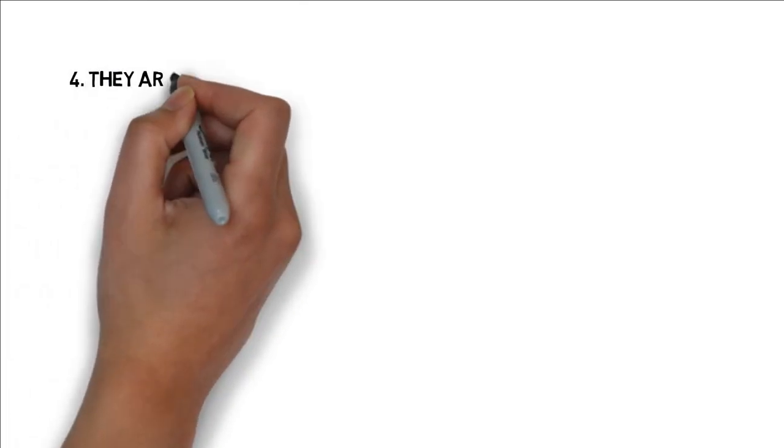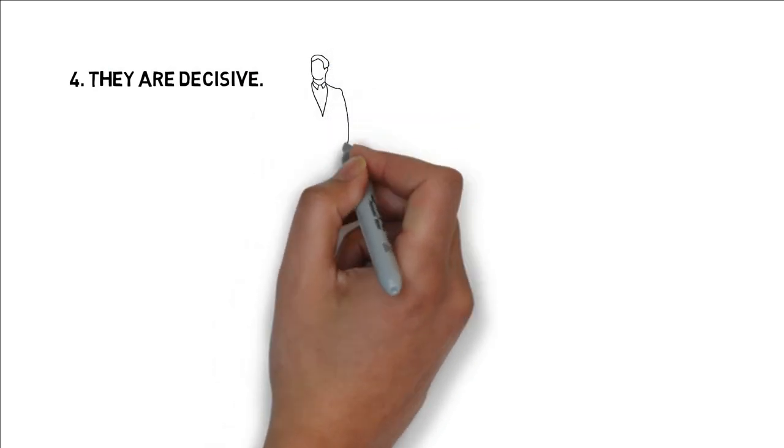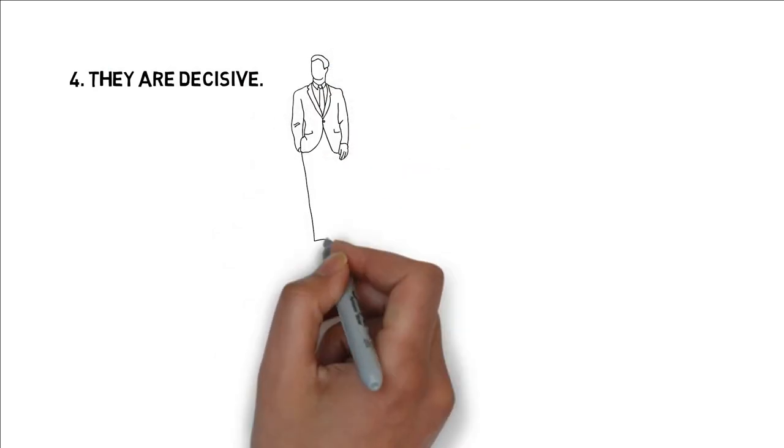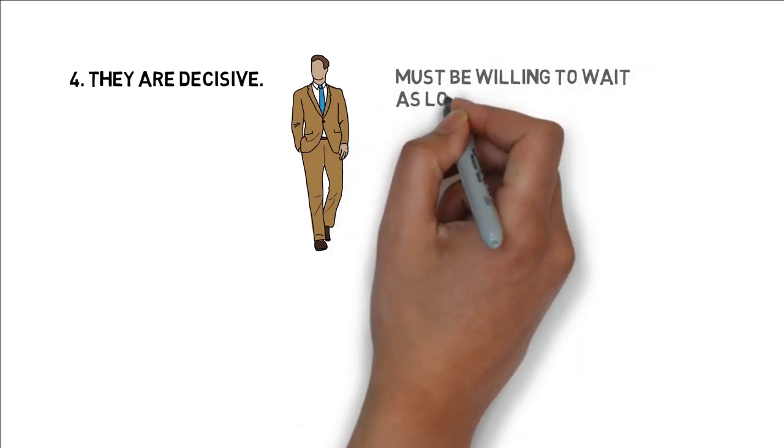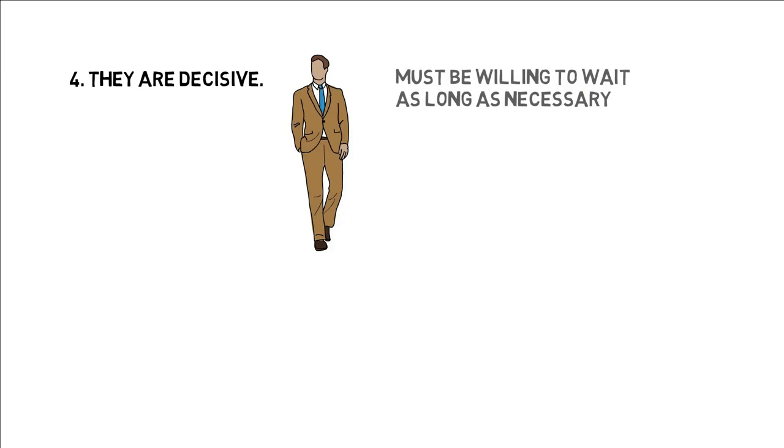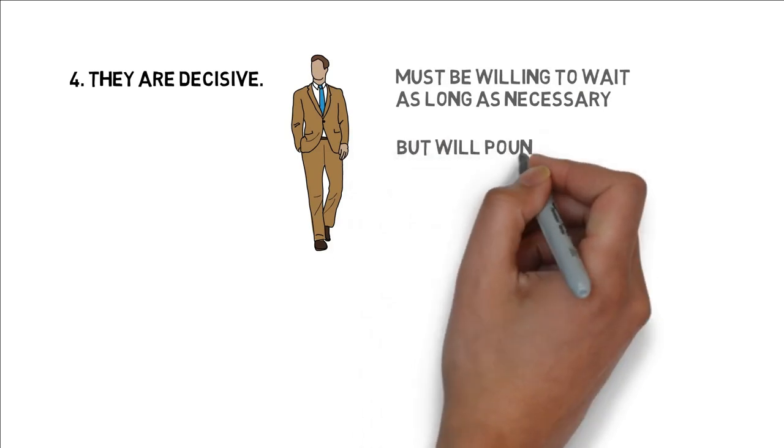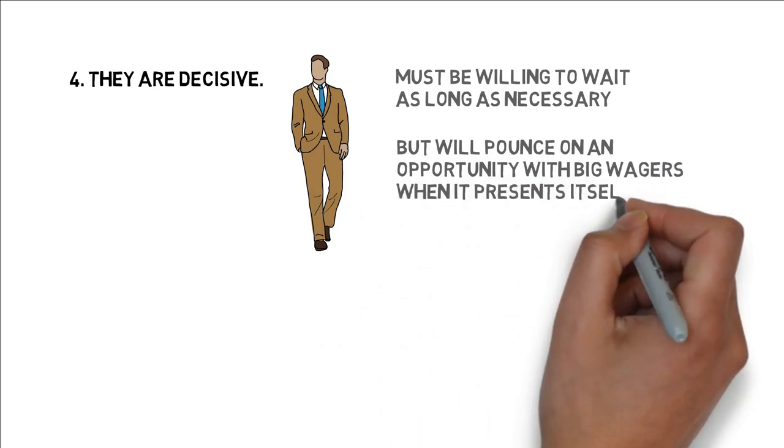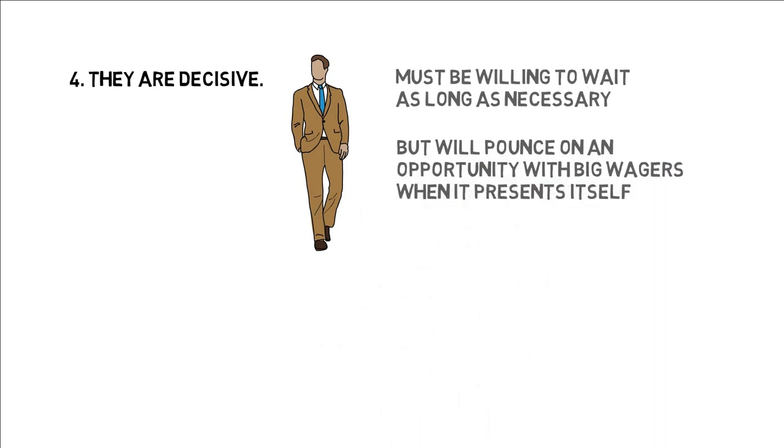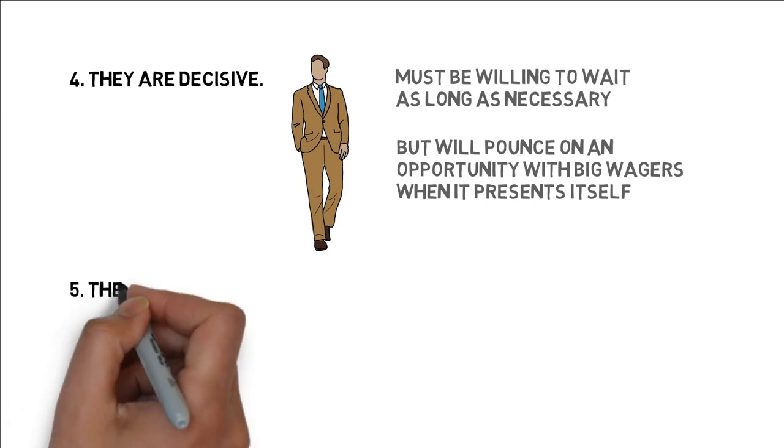Decisiveness is often seen as a characteristic that contradicts patience. However, a good value investor must possess both qualities. He or she must be willing to wait as long as necessary, even years, without making a move, but will pounce on an opportunity with big wagers when it presents itself, which is usually during a bear market.